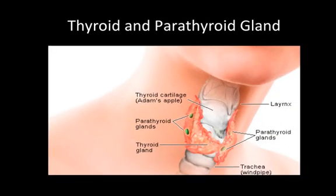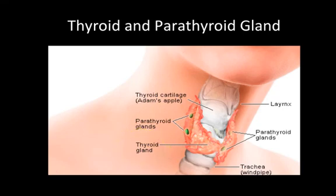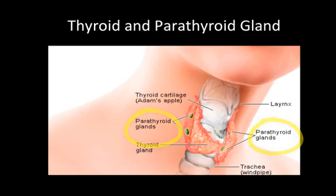Each of these glands are located in the neck around the cartilage of the larynx near your Adam's apple. The thyroid is larger and secretes several other hormones responsible for your metabolism as well. There are four little parathyroid glands on the posterior side of the thyroid gland.